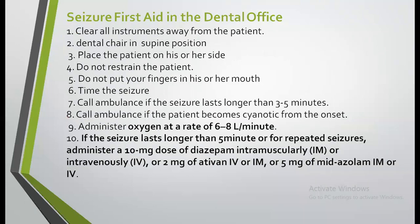Seizure first aid in the dental office: clear all instruments away from the patient; place the dental chair in supine position; place the patient on his or her side; do not restrain the patient; do not put your fingers in his or her mouth; time the seizure. Call an ambulance if the seizure lasts longer than 3 to 5 minutes, or if the patient becomes cyanotic from the onset. Administer oxygen at the rate of 6 to 8 liters per minute. If the seizure lasts longer than 5 minutes or for repeated seizures, administer 10 mg of diazepam intramuscularly or intravenously, or 2 mg of ativan intramuscularly or intravenously.